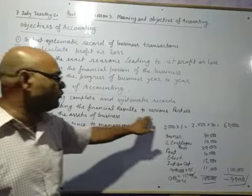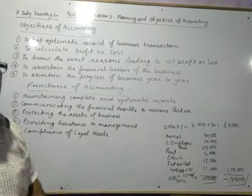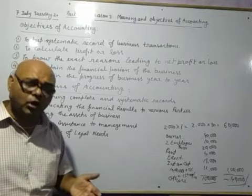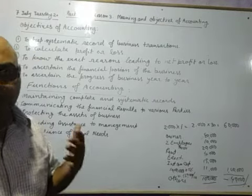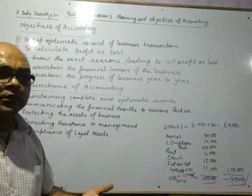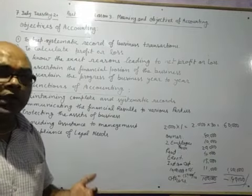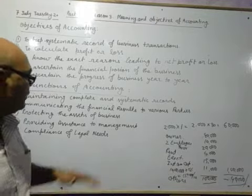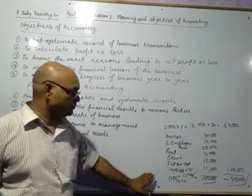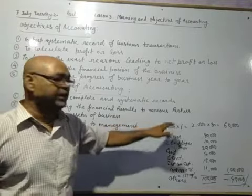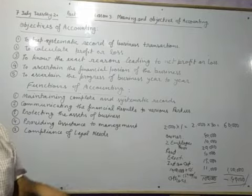Communicating the financial result to various parties. There are so many users of accounting: internal users and external users. Internal users are the owner or management of the firm. External users include creditors, financing companies, and government. Everyone needs accounting information for taking decisions, and all the information they collect only from the accounting book. So accounting communicates to various parties.